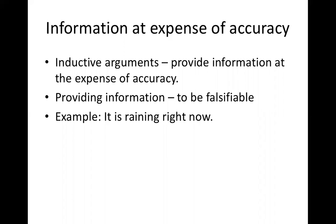Whenever you provide information, that information is falsifiable. For example, 'It is raining right now' — the statement could be true or false. Right now it is false where the speaker is staying. Falsifiability means the statement can be true or false depending on facts. Any valuable empirical information must be falsifiable. Any statement that is not falsifiable cannot be a verifiable or confirmable statement. Any statement that is absolutely true has no empirical content.